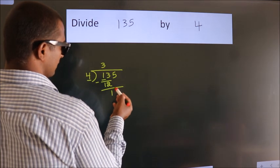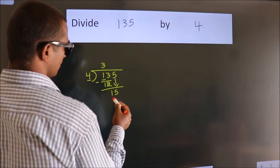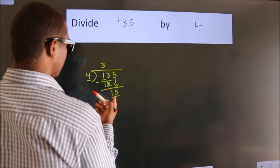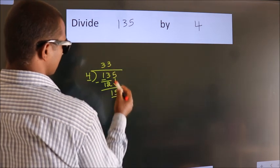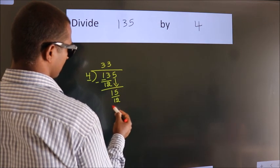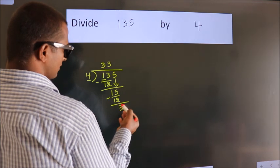After this, bring down the next number. So, 5 down. So, 15. A number close to 15 in the 4 table is 4 times 3, which is 12. Now we subtract. We get 3.